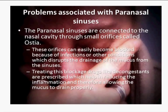Let's look at the problems associated with Paranasal Sinuses. They are connected to the nasal cavity through small orifices called Ostea. These orifices can easily become blocked because of infections or other conditions, which disrupts the drainage of the mucus from the sinuses. To treat this blockage, drugs like decongestants are prescribed, which help in reducing the inflammation and therefore allowing the mucus to drain properly.